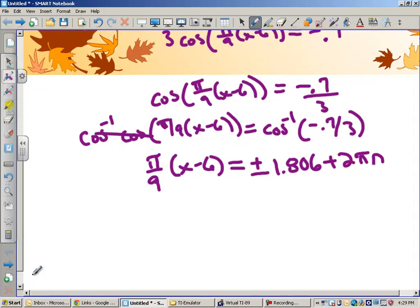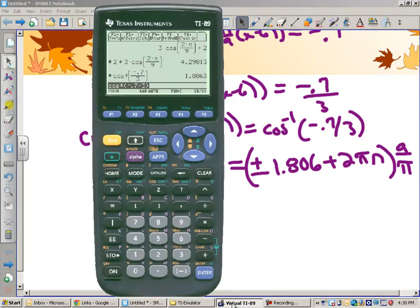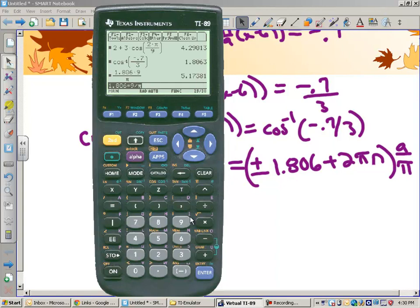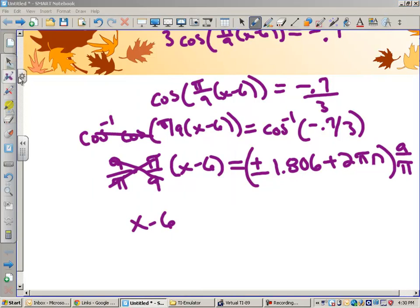Okay, so the next thing that we want to do is we want to multiply by 9 over pi. So, I'm going to take all of this and multiply it times 9 over pi. Our 9's are going to cancel and those pi's are going to cancel, and that leaves me with x minus 6. But I need to figure out what is 1.806 times 9 over pi. 1.806 times 9 divided by pi gives me 5.174.